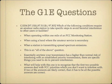Which of the following conditions require an amateur radio station to take specific steps to avoid harmful interference to other users or facilities? There are several conditions: when operating within one mile of an FCC monitoring station, when using a band where the amateur service is secondary, and when a station is transmitting spread spectrum emissions. This is an all-of-the-above question. Any time your transmission has a higher than normal risk of interfering with an established priority transmission, there are specific things you need to do to prevent interference. The first two answers deal with FCC priorities, so if two answers are likely correct, all answers must be correct.